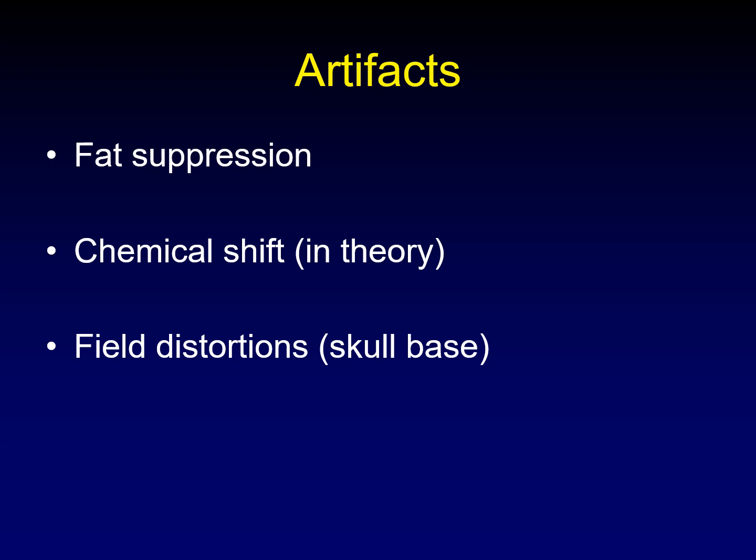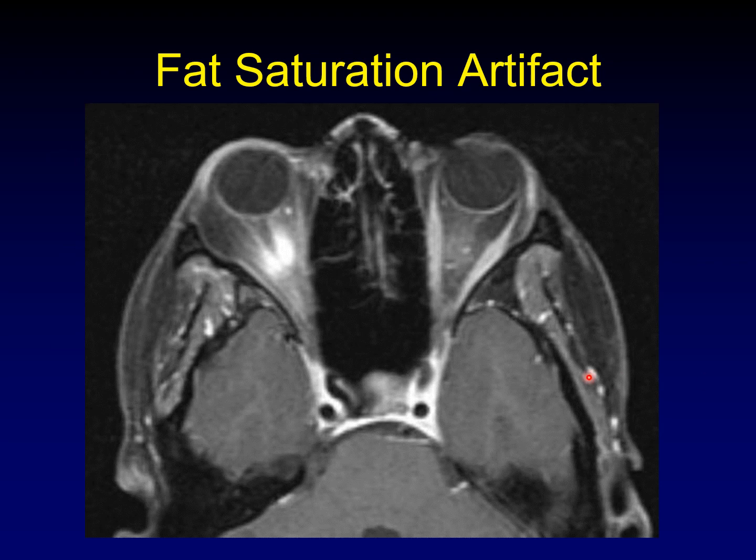What artifacts might lead us to incorrectly conclude there's perineural spread? The most likely is local failure of fat suppression, where unsuppressed fat might look like enhancement. Chemical shift could theoretically widen the appearance of a nerve surrounded by fat. Field distortions at the skull base on 3T scanners can cause what looks like abnormal enhancement. This is why 1.5T often does a better job for skull base evaluation. Here's an example of a fat saturation artifact that is focal and runs along a nerve, which can be a little bit confusing.